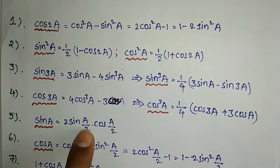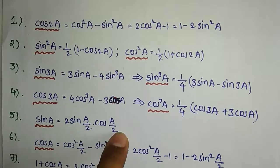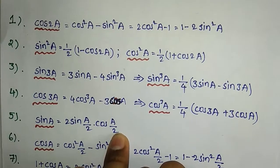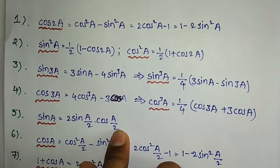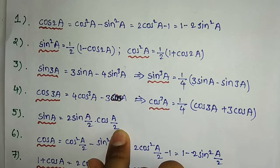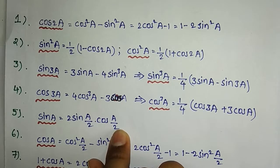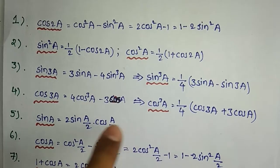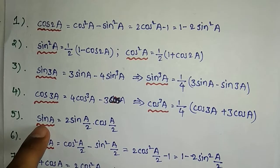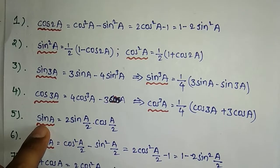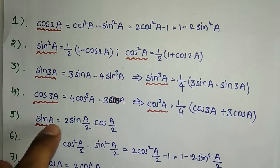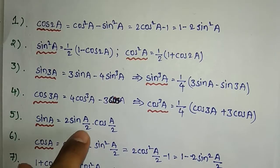sina equals 2sin(a/2)·cos(a/2). This is the formula. The sin2a formula is sin2a equals 2sina·cosa. But here we only have theta, so we divide by 2: sina = 2sin(a/2)·cos(a/2).